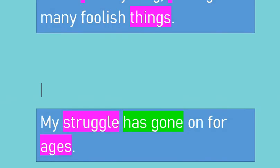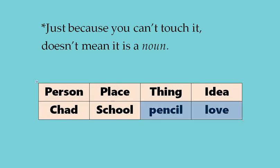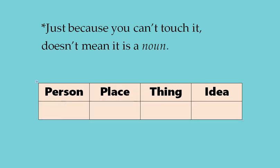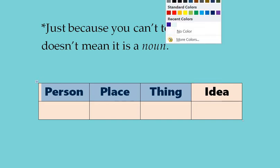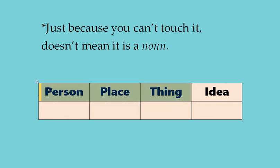One last reminder: a person, place, or thing — these are going to be concrete nouns. And if it is an idea, that idea is going to be an abstract noun. From those first three categories we have concrete; the last category, idea, gives us abstract. And just because you can't touch it doesn't mean it is a noun — make sure you check that it's actually a noun first.